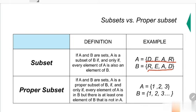D, E, A, R, that can be found on both sets. So A is a subset of B, but B is also a subset of A.